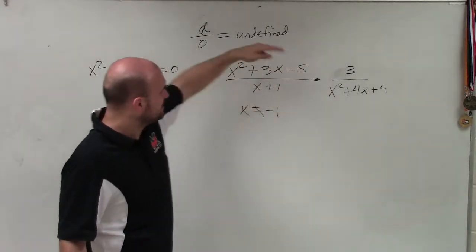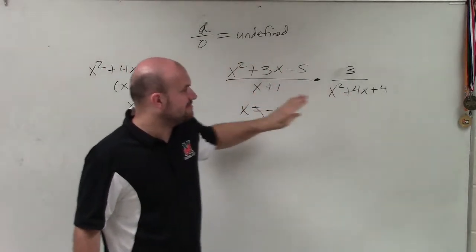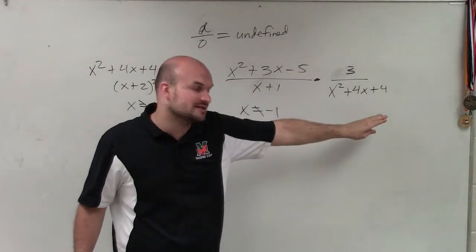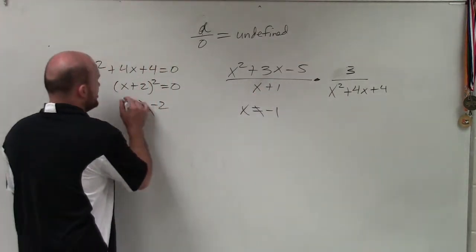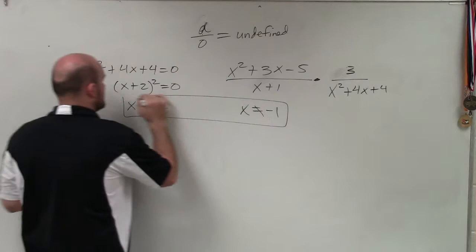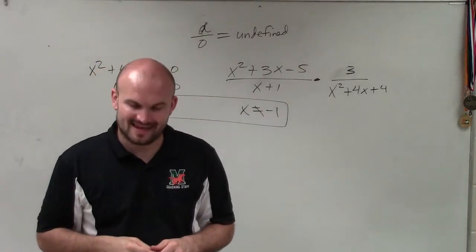Again, take your original problem, determine what is going to make 0 for each rational expression, and then those are going to be your restrictions on your simplified answer. Thanks.